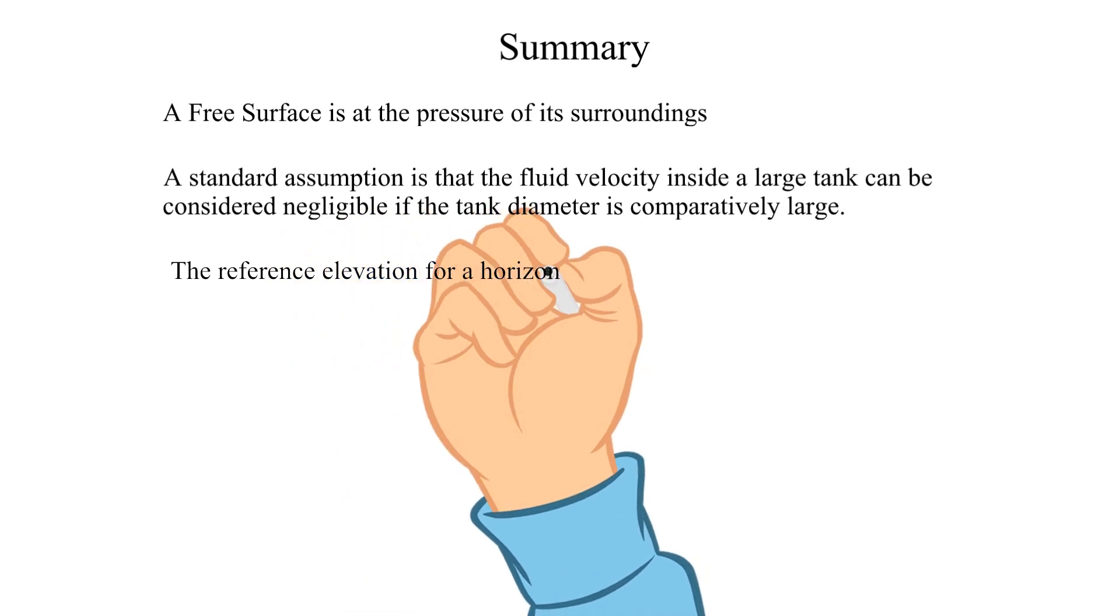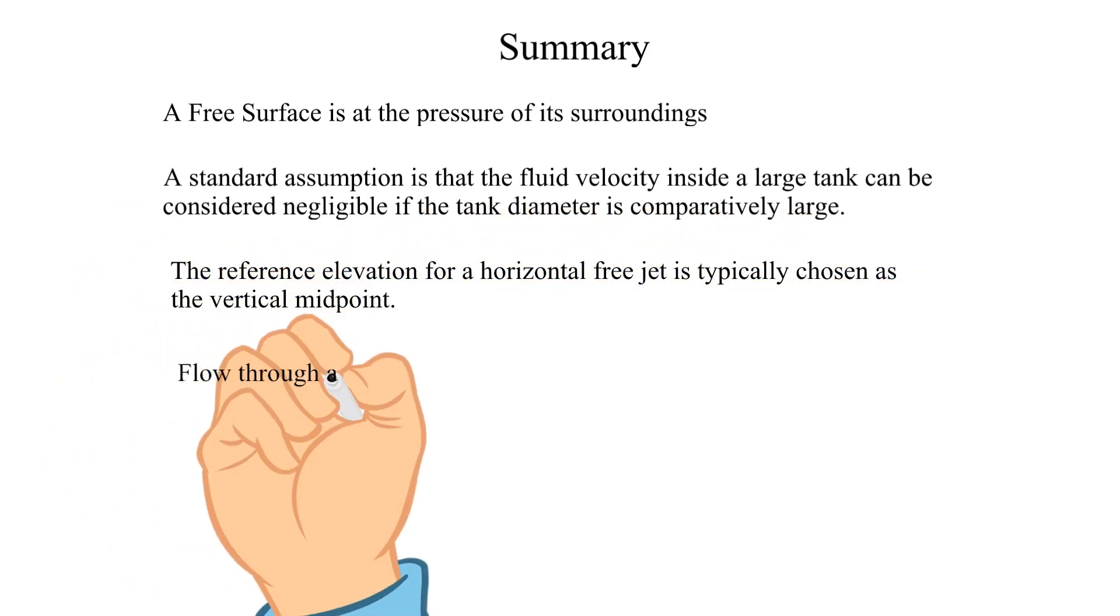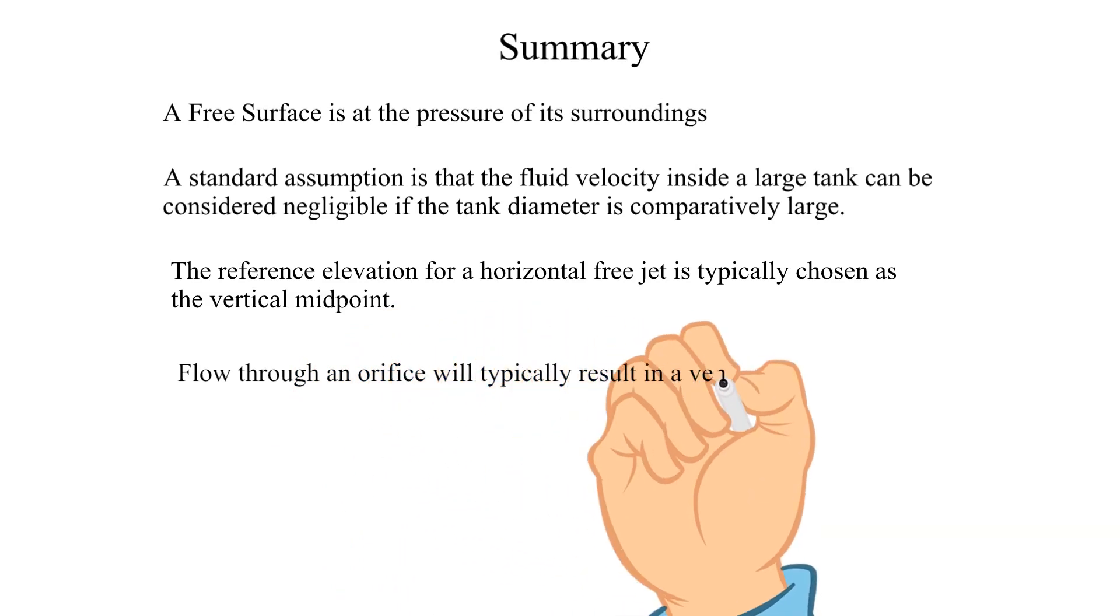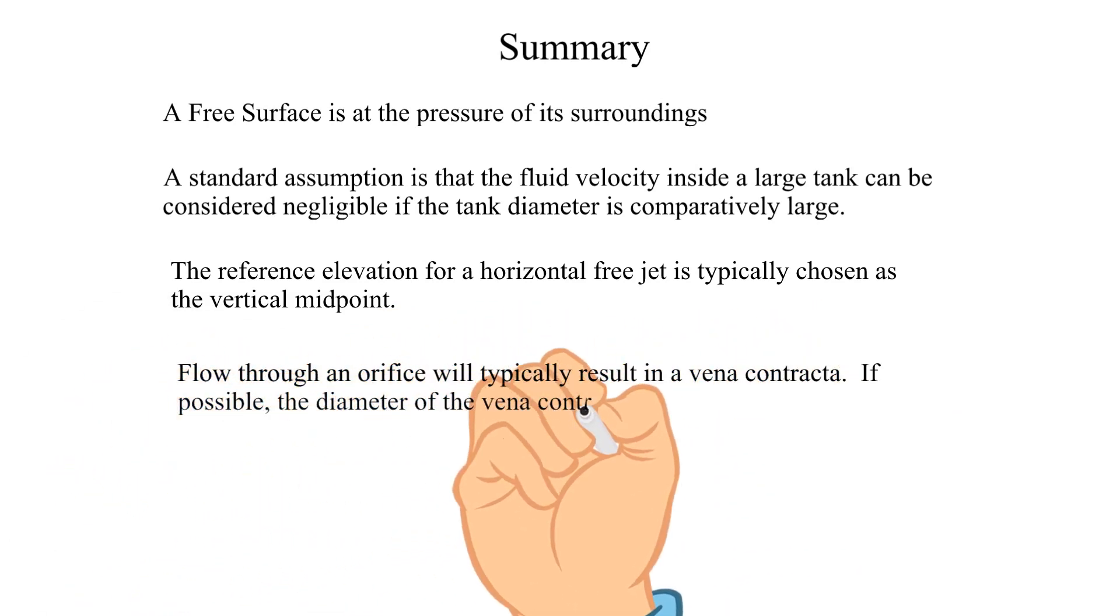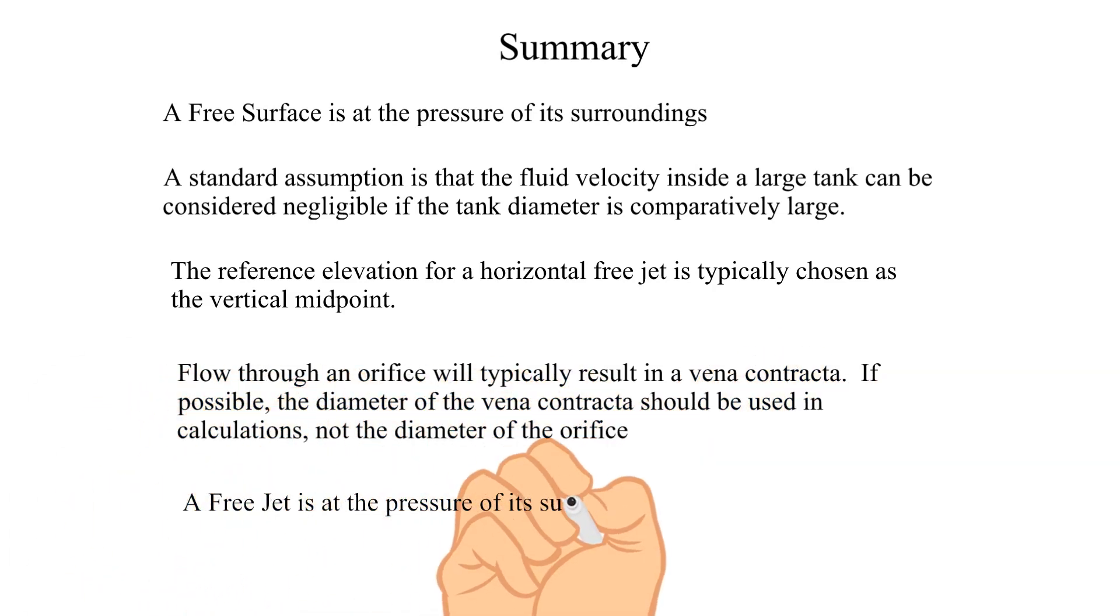The reference elevation for a horizontal free jet is typically chosen as the vertical midpoint. Flow through an orifice will typically result in a vena contracta. If possible, the diameter of the vena contracta should be used in calculations, not the diameter of the orifice. A free jet is at the pressure of its surroundings at the location where there is no curvature.